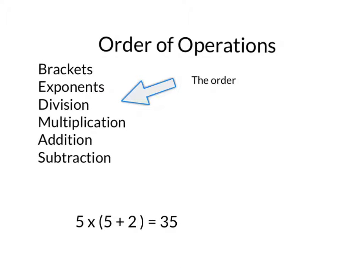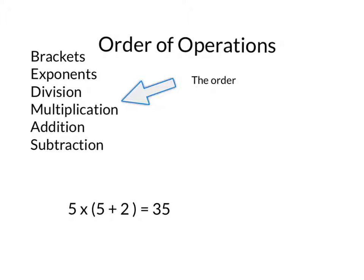This is just an example here. So as you can see, brackets is first, so when you do 5 plus 2, that equals 7. And then you just have 5 times 7, which makes 35. That's the answer to your question.